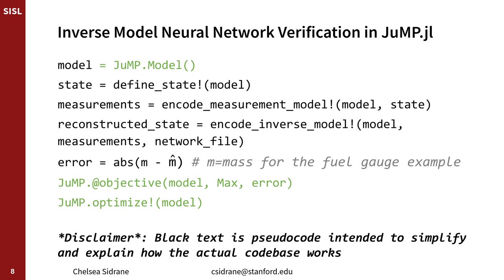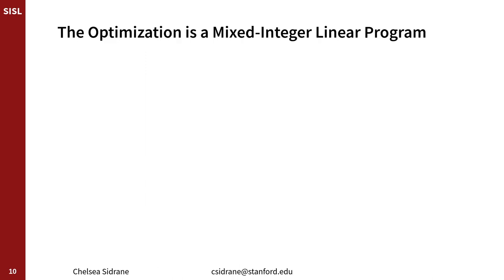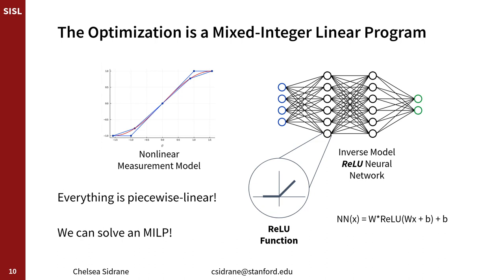But you might be wondering about those lines of code — what if the measurement model is nonlinear? How does that affect the optimization? We handle nonlinear functions in the forward measurement model by replacing them with piecewise linear bounds. This method for approximating nonlinear functions is implemented in our overt.jl package. Once we've approximated the nonlinear measurement model with piecewise linear bounds, if we restrict the inverse model neural network to a ReLU-activated network, then everything is piecewise linear and we can solve this as a mixed integer linear program.